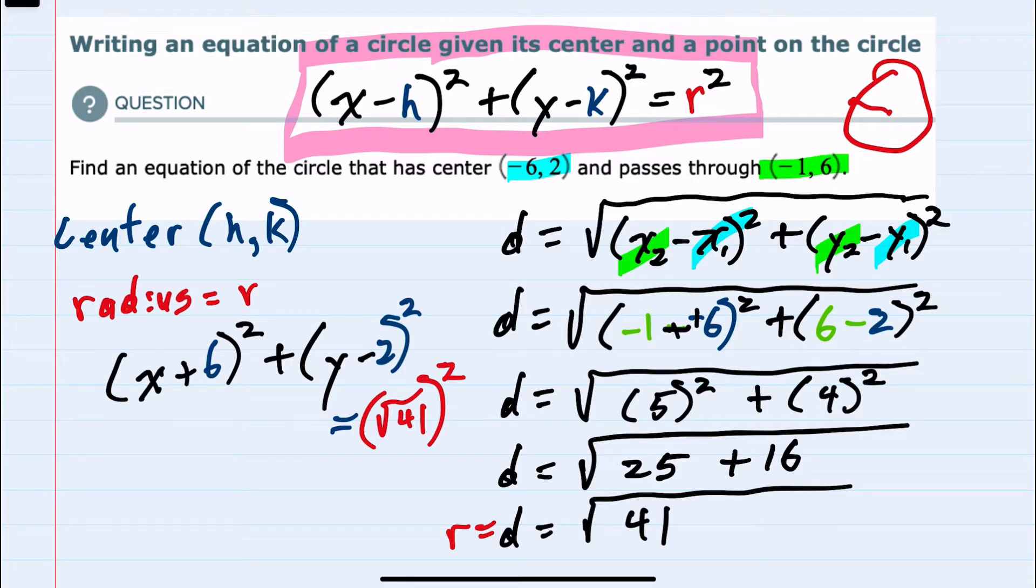So just to clean this up a little bit more: (x + 6)² + (y - 2)² equals the square root of 41 squared is 41. This would be the equation.